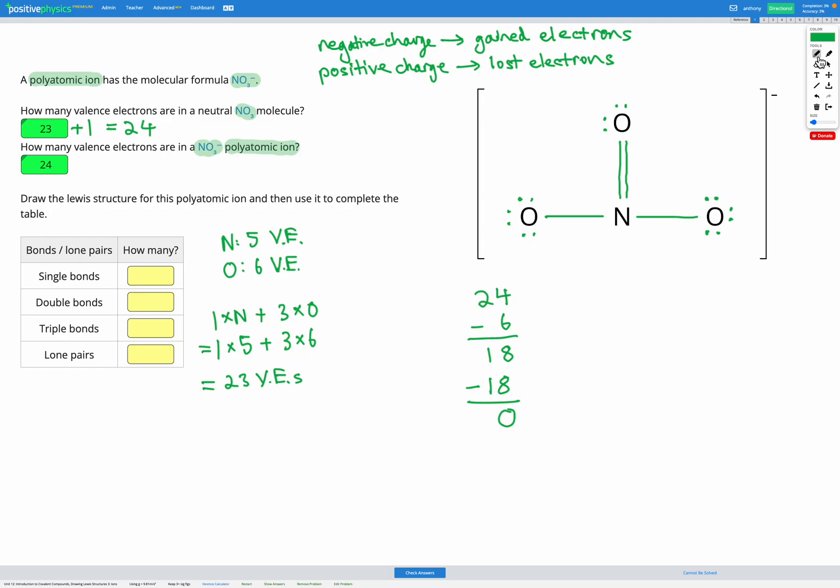So now we can see nitrogen has 4 covalent bonds, with a total of 8 electrons. These two oxygens on the sides each have 3 lone pairs and 1 covalent bond, for a total of 8 electrons. And our oxygen at the top has 2 lone pairs and 2 covalent bonds, each providing 2 electrons, which gives us a total of 8 electrons. So now, all of our atoms obey the octet rule, and we have the total number of electrons that equals what we should have for a NO3 minus ion, which is 24.